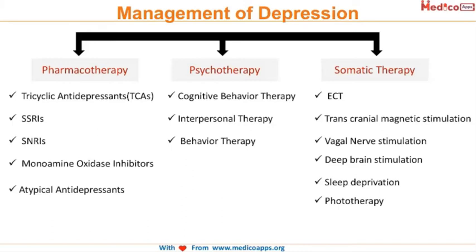About all of these we will learn individually in the upcoming slides. Overall, pharmacotherapy, psychotherapy, and somatic therapy are the three major ways in which we manage the patient of depression. There are certain classes of drugs used in pharmacotherapy, and somatic therapy is gaining a lot of interest in the coming era.